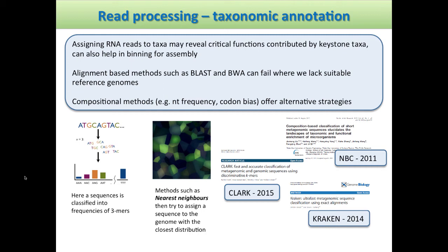Going back to the original question on taxonomic annotation: we've assigned RNA reads to different functions, but we might want to know which taxa are actually responsible for these functions so we can identify the keystone taxa. Another idea is that this can also help with binning for assembly — you might want to take your sequence reads, bin them into different taxonomic groups, and then assemble them once you've done the binning. Processes such as taxonomic annotation of your reads could help with that binning step prior to assembly.